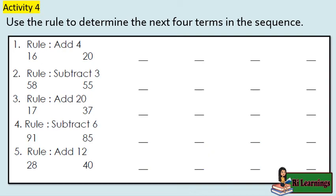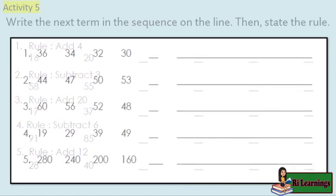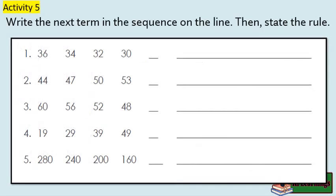Activity 4: Use the rule to determine the next four terms in the sequence. Write the next term in the sequence on the line, then state the rule.